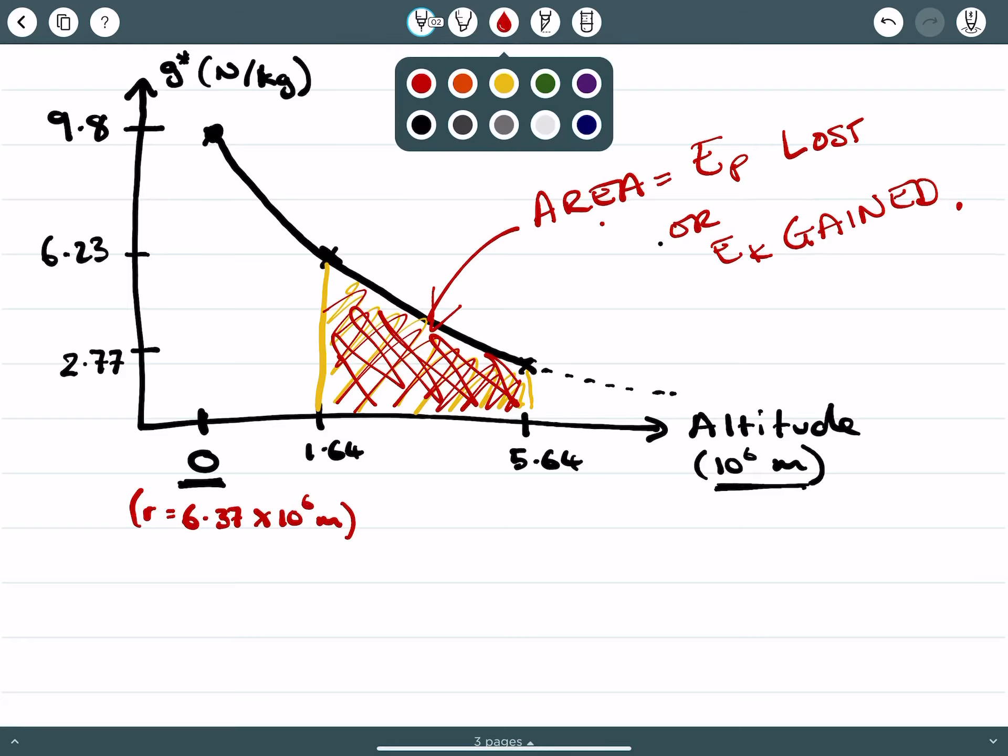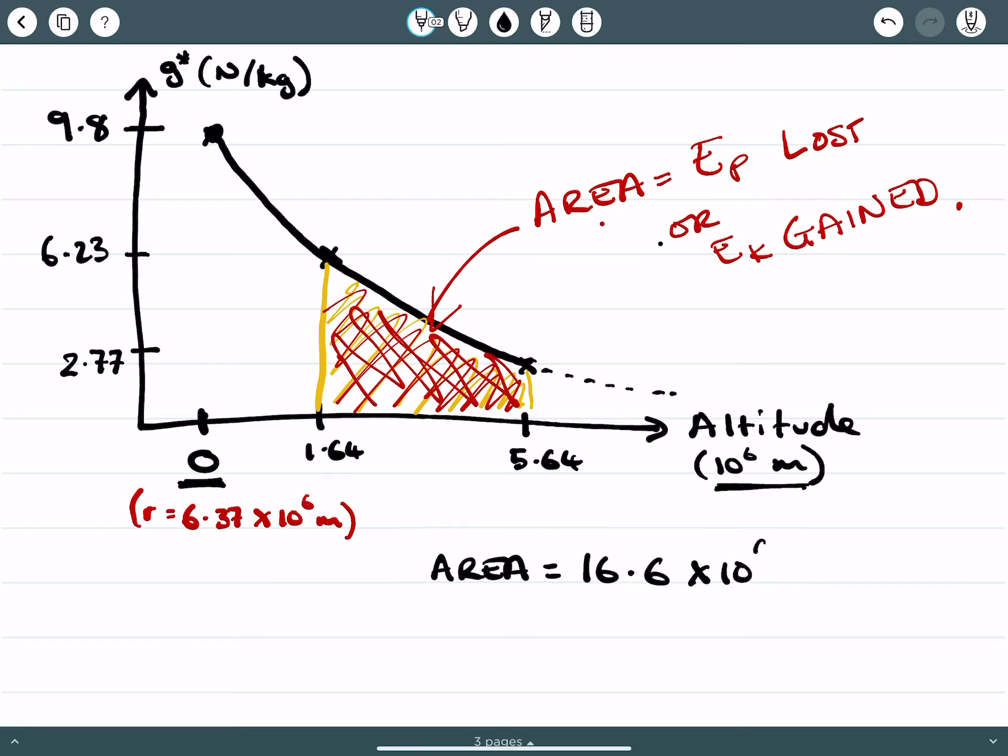This area equals potential energy being lost or kinetic energy gained. And what I've done previously is I've done some calculations, and these are generally approximations. You'll need to do the whole method of counting squares and making those calculations appropriately. But what I've found with my approximation is that this area was given by 16.6 times 10 to the 6 newtons meters per kilogram. Now, I want to talk a little bit about this aspect, the units here. We need to appreciate that this energy is for each kilogram of mass. So obviously, if we have a greater mass, there's more energy.